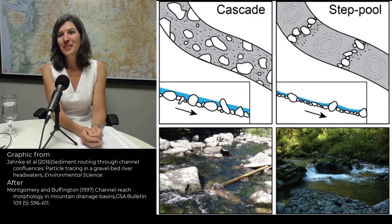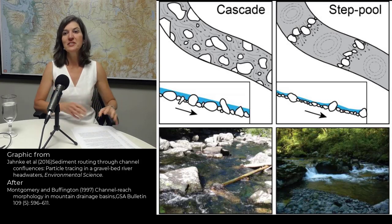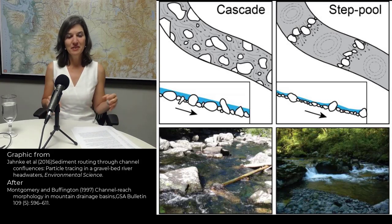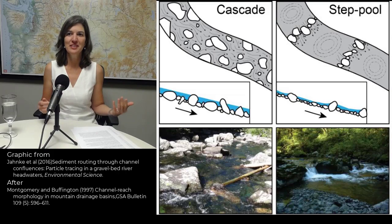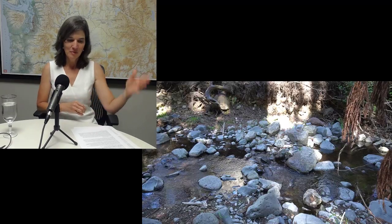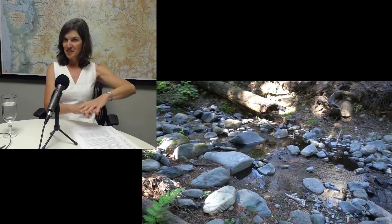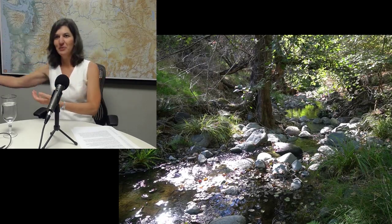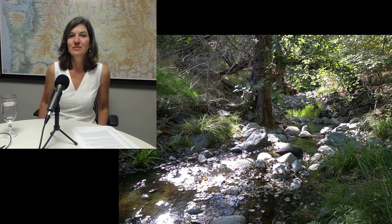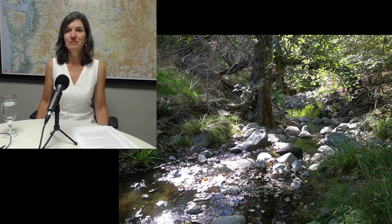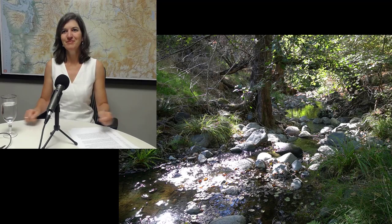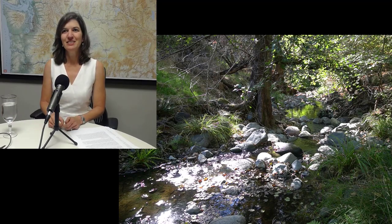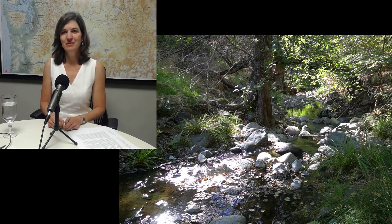Cascades are more random — not randomly spaced, just more random boulders all over the place. With steps you really can tell a step differently. You get this defined overflow into a pool that's been scoured just below the step form, and there's usually a hydraulic jump coming out of that, and then it goes for a little while and then there's another one. A step pool sequence definitely has a pattern, whereas with cascades there's just boulders here and there and the water's moving around them.